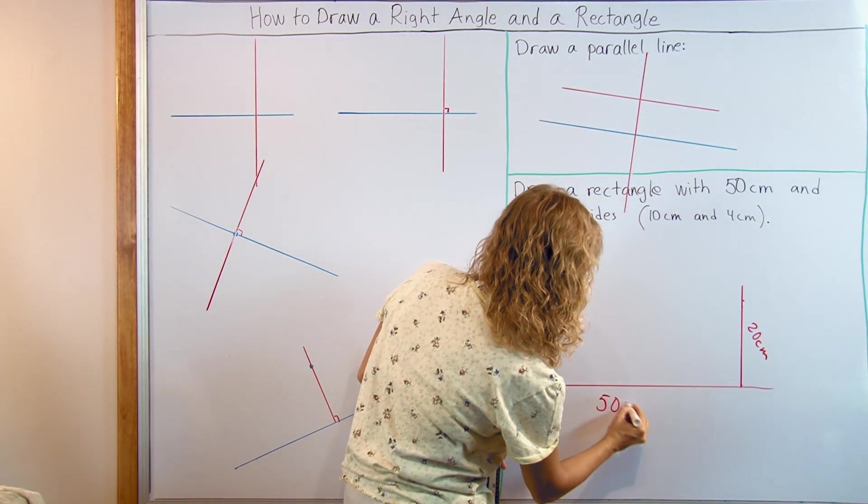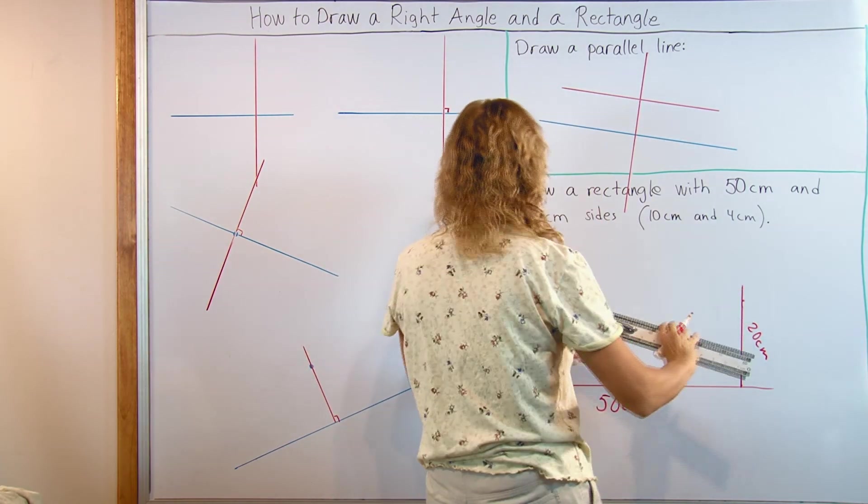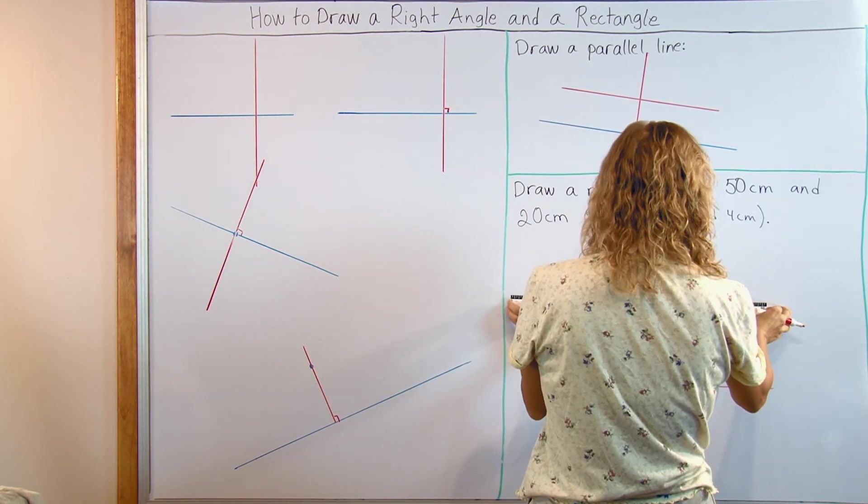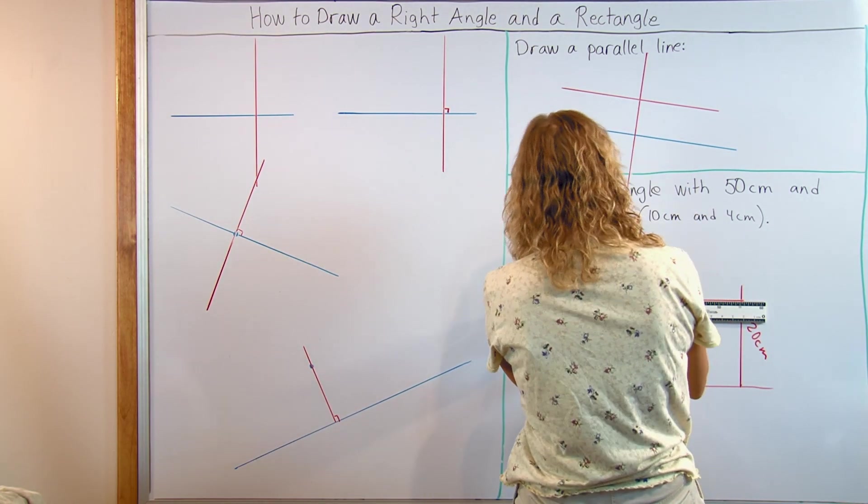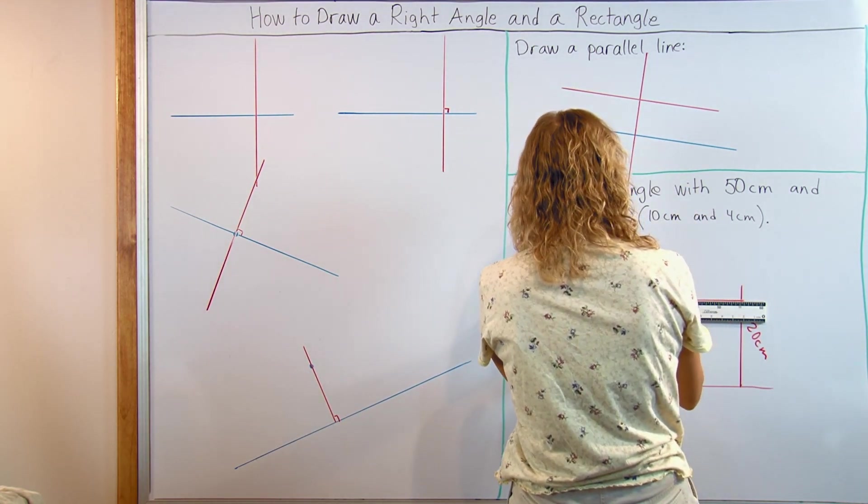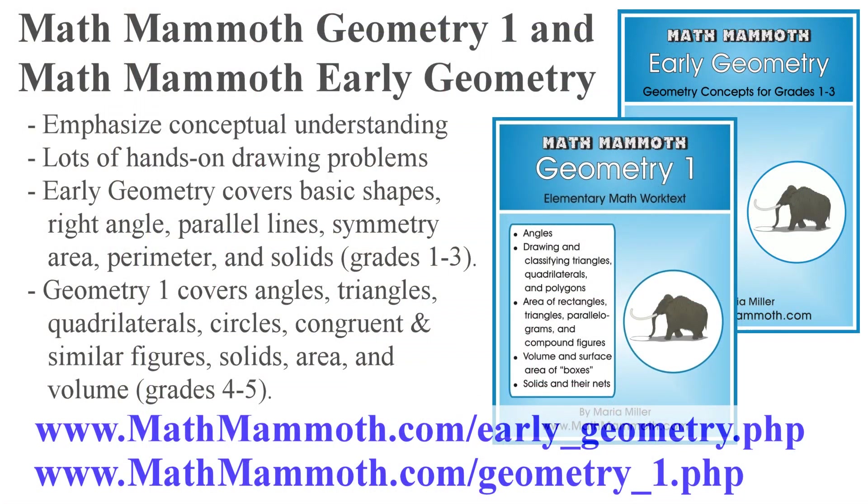So now I should be able to just draw a line from here to here. There. And here's my rectangle.